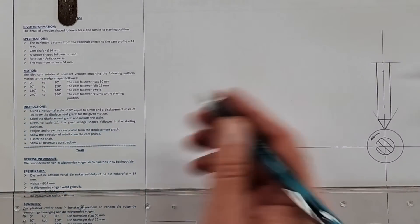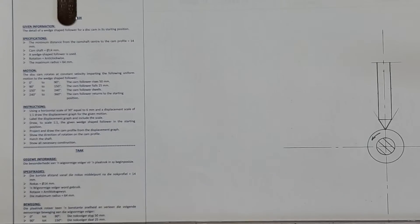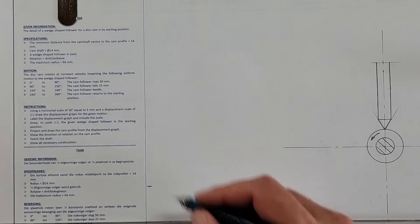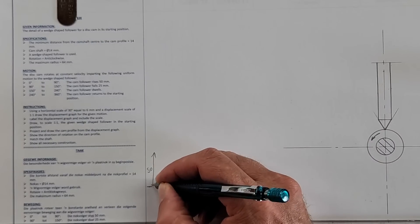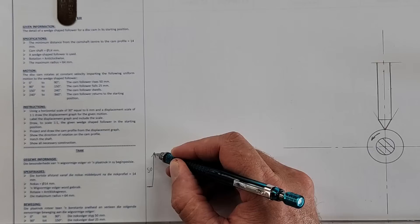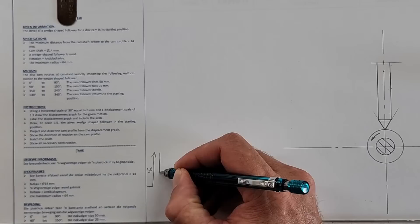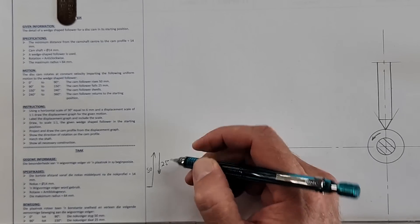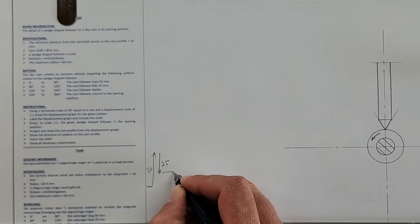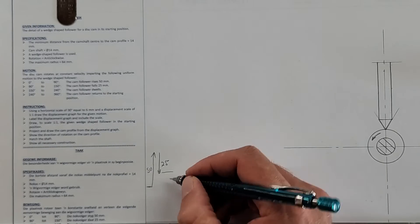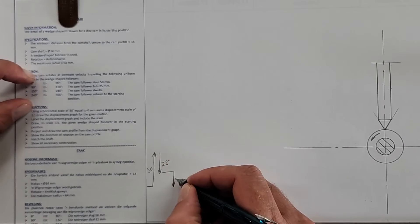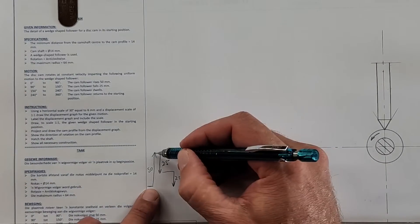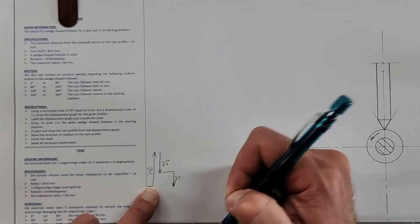Now let's look at the motion that's provided. Find an empty space, make a little mark. It says from 0 to 90 the cam follower rises 50 millimeters with an arrow. Then the cam follower falls 25 directly after that. Then it dwells, in other words it stays at rest from 150 to 240, and then it returns to the starting position. Do a little bit of a diagram to help you just see the motion there initially. Maximum displacement here is 50.